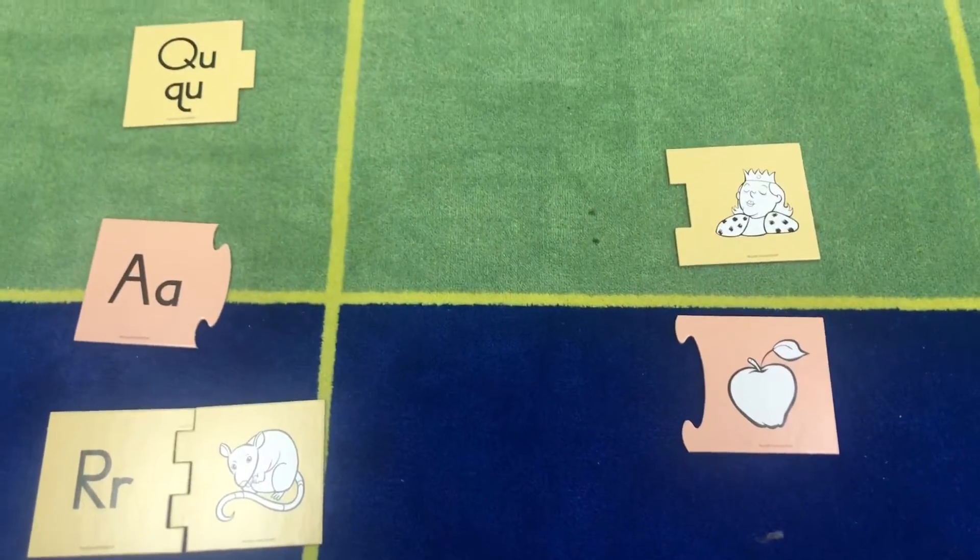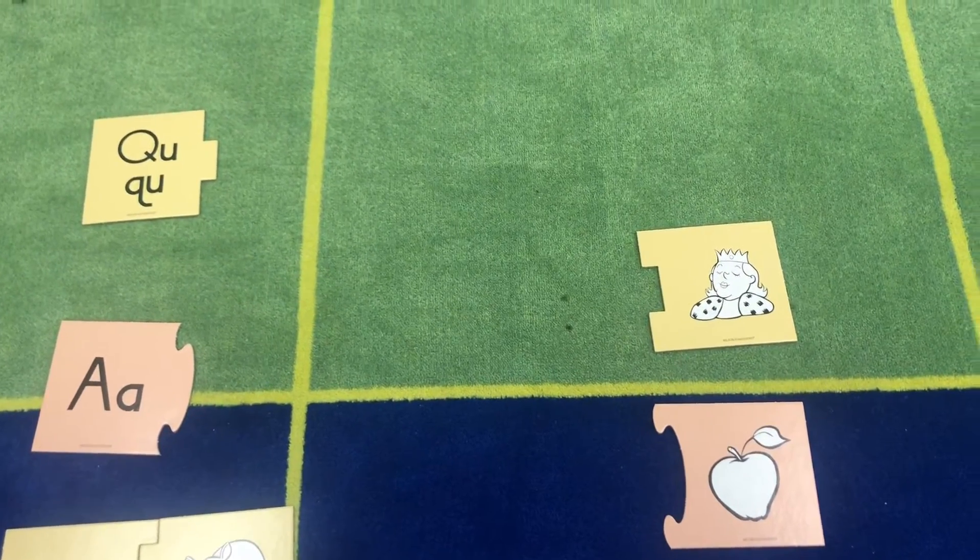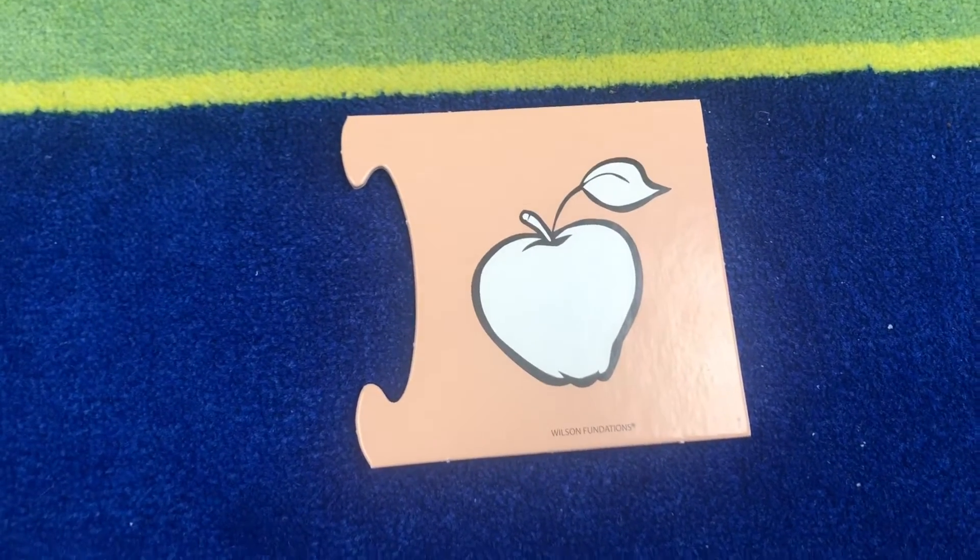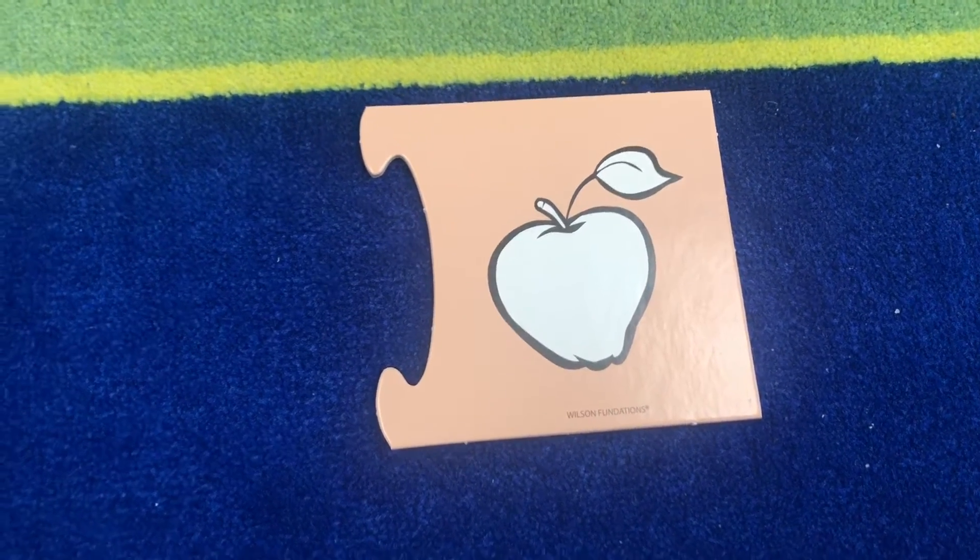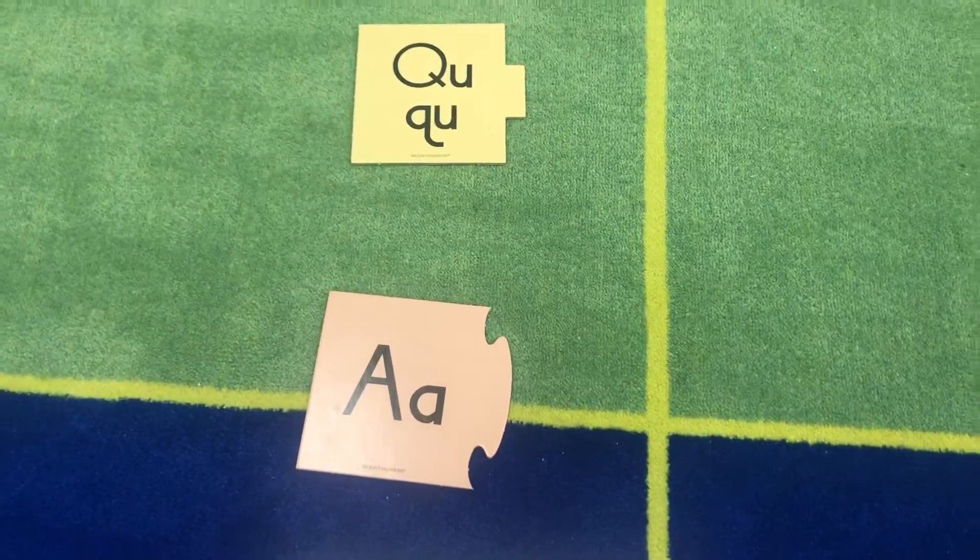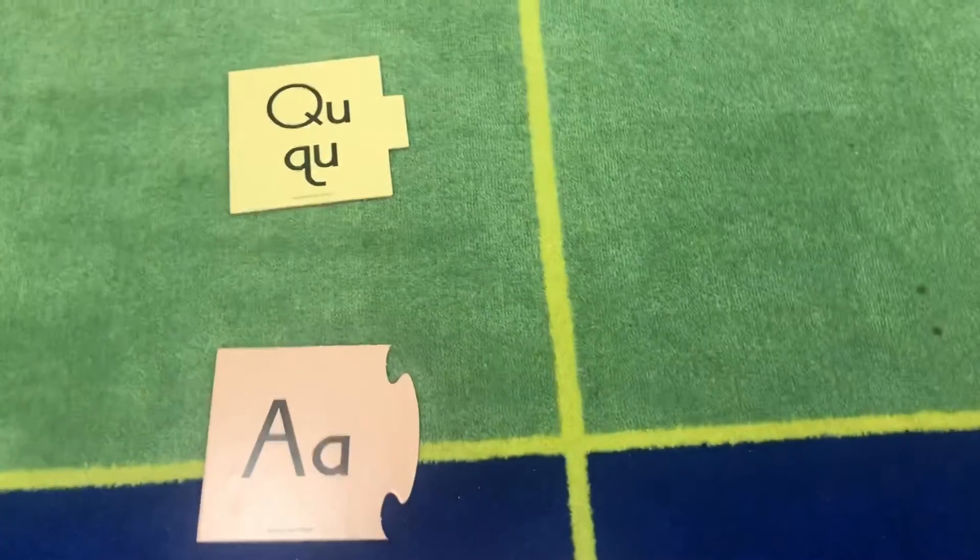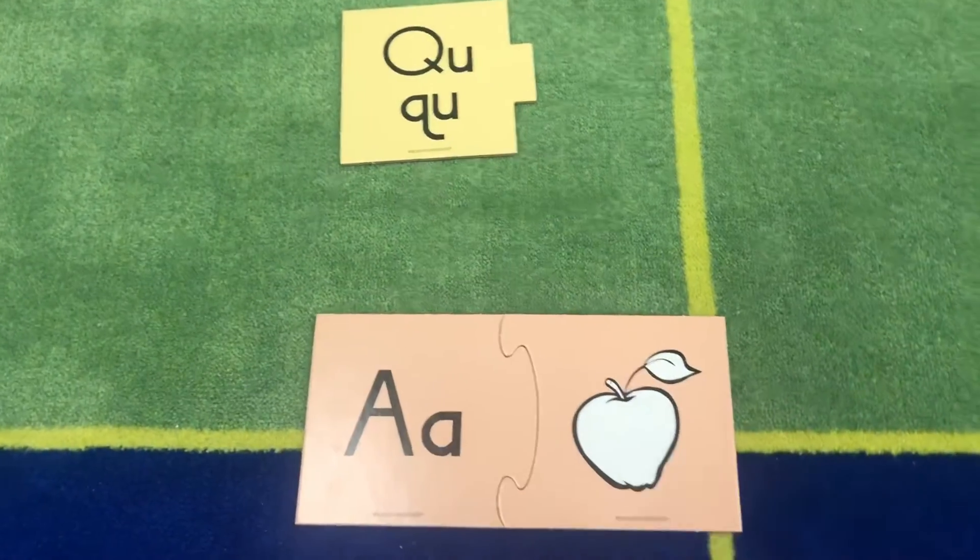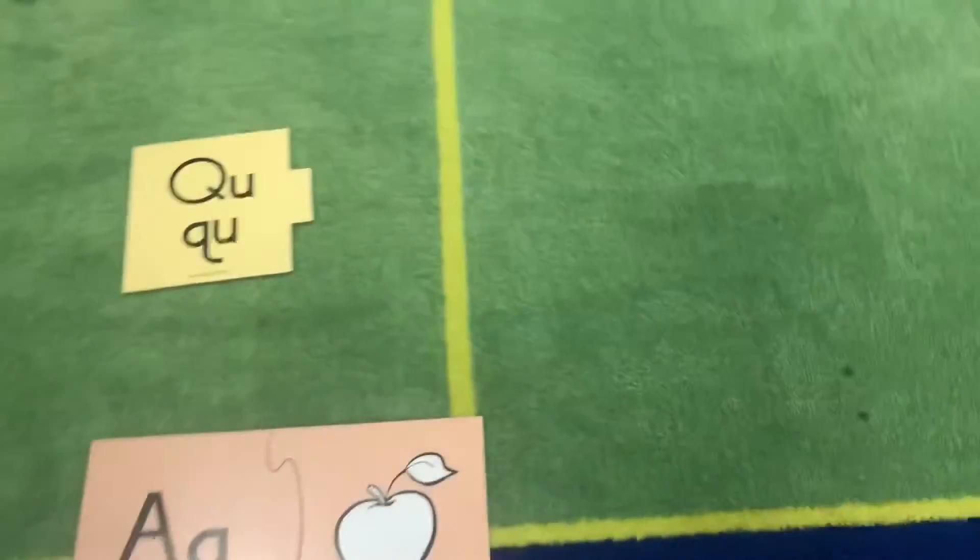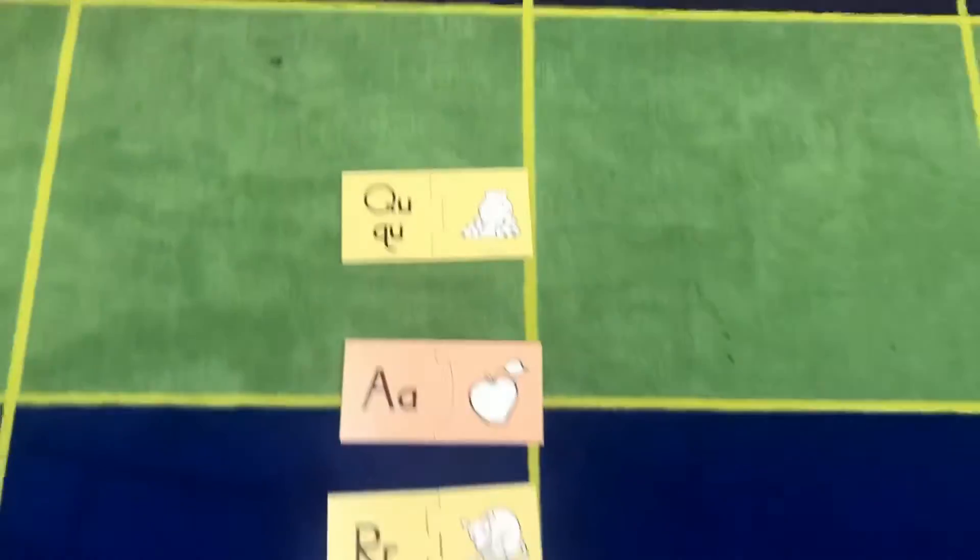Match our rat with R. Okay, now we've got these last four. This is an apple. Say apple. Does apple start with an A or a Q? A is correct. And then QU, QU starts with the Q. Good job, everybody.